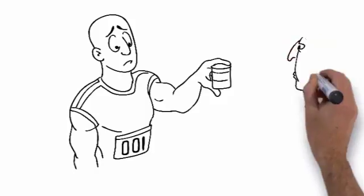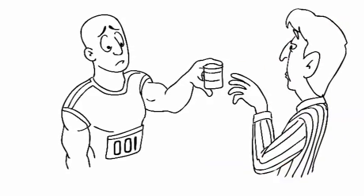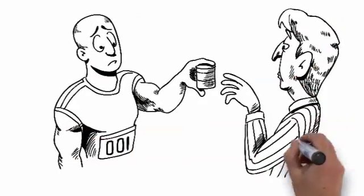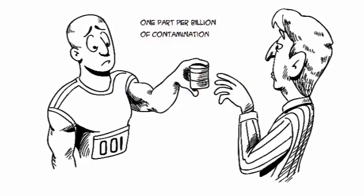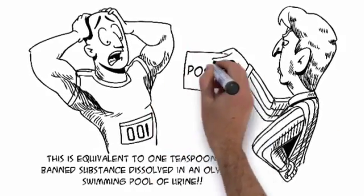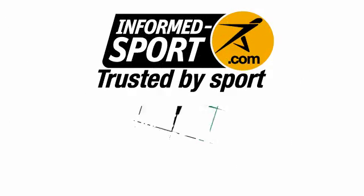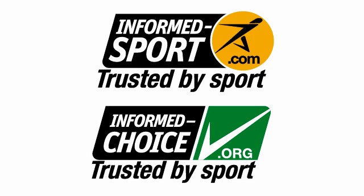So, traces of banned substances can easily find their way into legitimate products and urine samples containing one part per billion of contamination can lead to a positive drugs test and careers left in tatters. The answer is simple. Look for the Informed Sport Informed Choice logo to guarantee tested product.